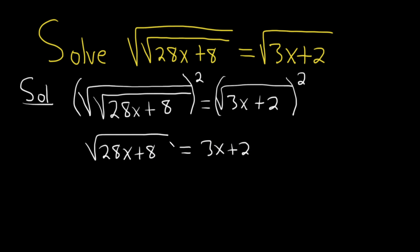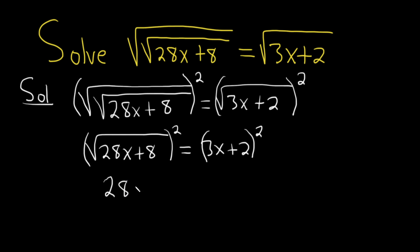Now we have to get rid of the square root again because we still have one here. So we square both sides again, and then we're left with 28x plus 8 equals...